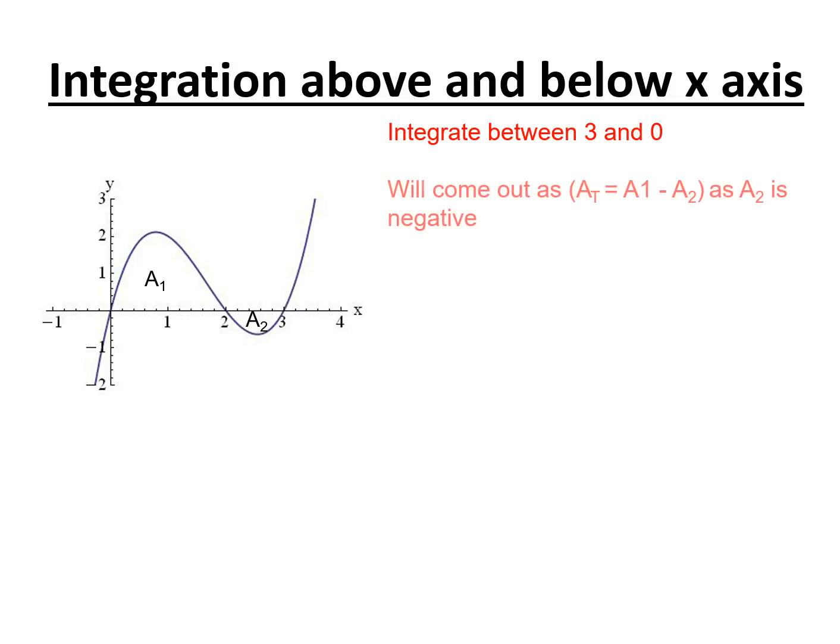So if we're integrating between three and zero, the total area will come out as a1 minus a2 as a2 is negative.